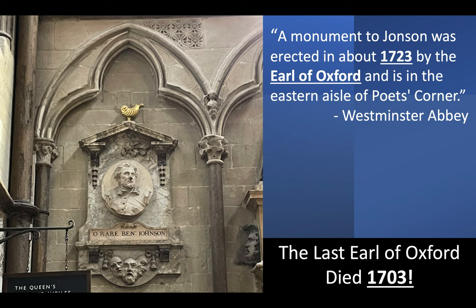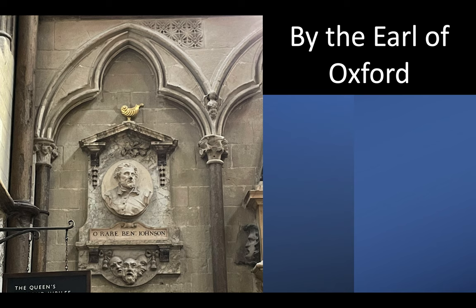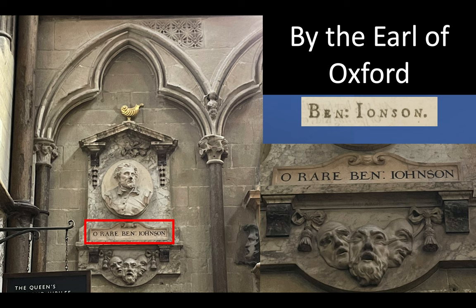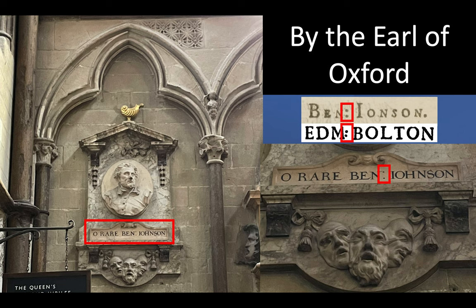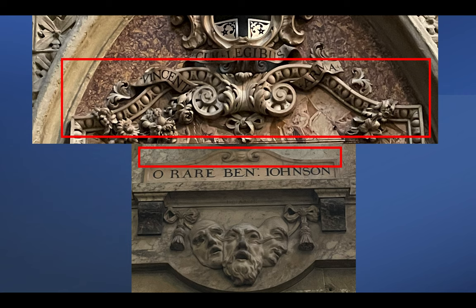There's a problem: the last Earl of Oxford died by that title in 1703 — I go into this discrepancy in a short video you can watch. The inscription at the bottom says 'O rare Ben Johnson.' Interestingly, in the First Folio, Ben Jonson signs his name with a colon between Ben and Johnson — just as Edmund Bolton also has a colon in his name. Comparing this monument to the one opposite Shakespeare, we have the same curly horns and ties at the top.